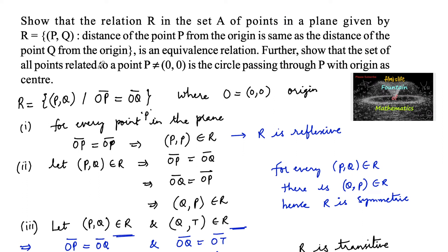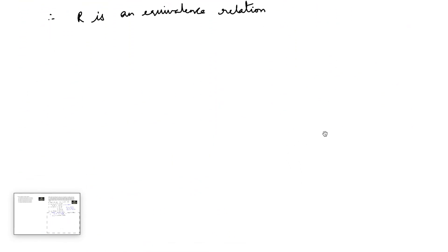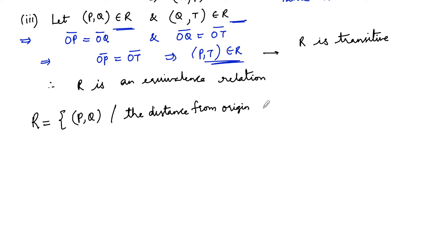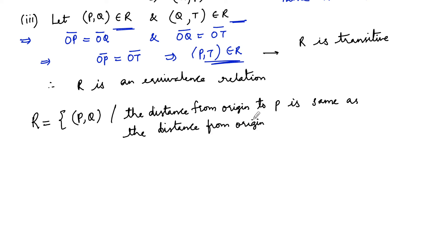Now to show that the set of all points related to a point other than the origin is the circle passing through P with origin as center. In our relation, R = {(p, q) : distance from origin to point P is same as distance from origin to point Q}.